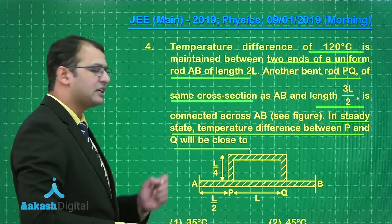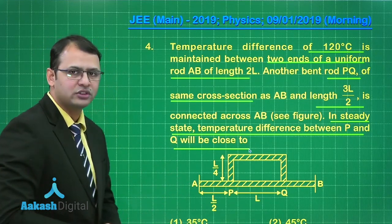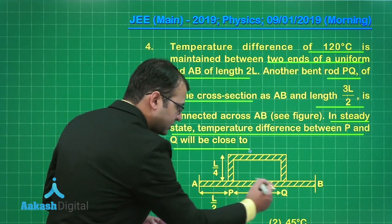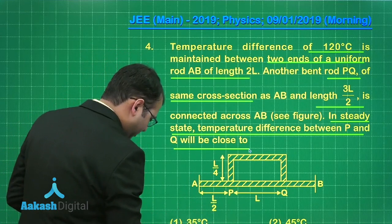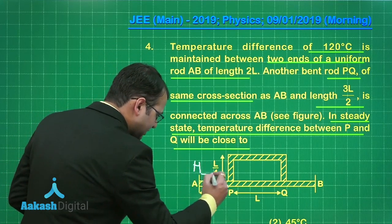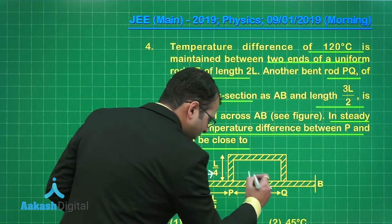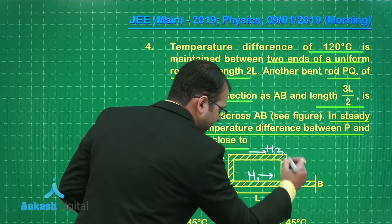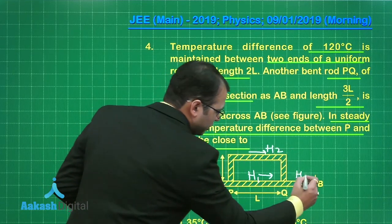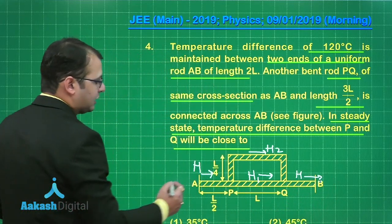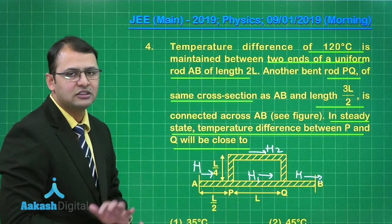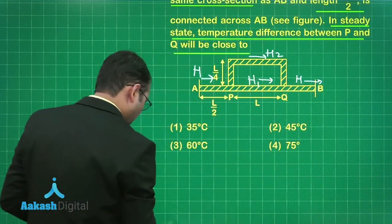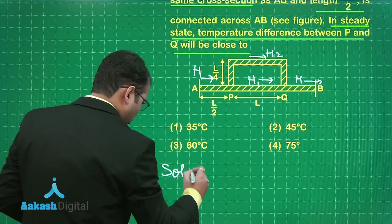So as you are well aware that in steady state, the heat flow would be constant. So whatever heat will be supplied from this end, some heat will go from this and some heat will go from this. So let's take that from here, H heat is being supplied. From here, H1 is flowing like this and from this part, H2 is flowing. Further, H heat, they will both join and they will flow in this manner where the temperature difference between A and B is given as 120 degree. Now, with this formulation of flow of heat, let's start with the solution.